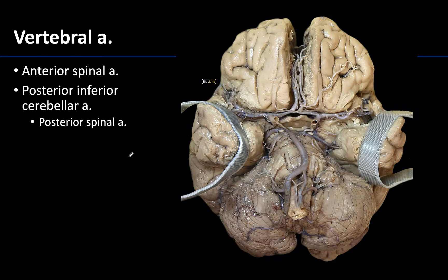The brain is going to be supplied by two main arterial sources, and the vertebral arteries are going to be one of these. You can see the vertebral arteries here, closely associated with the medulla. It's not uncommon for the caliber or the size between the right and the left to vary. Recall that the vertebral artery is a branch of the first part of the subclavian artery, so it has to ascend quite a ways through the transverse foramina of cervical vertebrae C1 through C6 and eventually up through the foramen magnum.